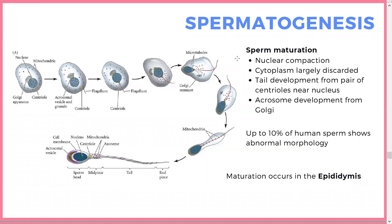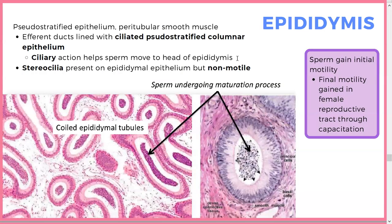Sperm mature in the male reproductive system but don't gain full motility until they're in the female reproductive tract — that's where they gain hypermotility. Once ready, sperm go into the epididymis, which is made of pseudostratified epithelium, peritubular smooth muscle to move things along, and ciliated pseudostratified columnar epithelium to aid movement.